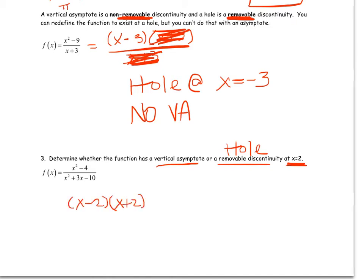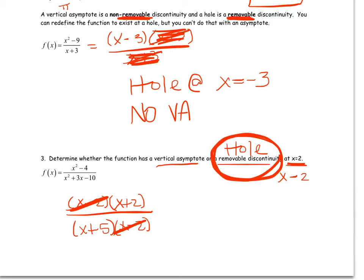So this time, x minus 2 cancels. Since x minus 2 cancels, you know, x minus 2 is the binomial that goes with x equals 2. Since it cancels, that's a hole. So which one is it? It's a removable discontinuity or hole.